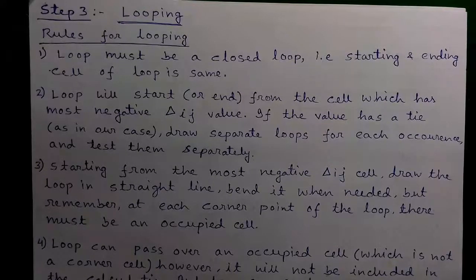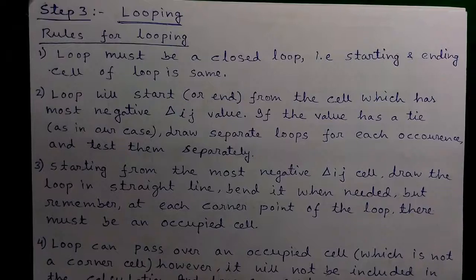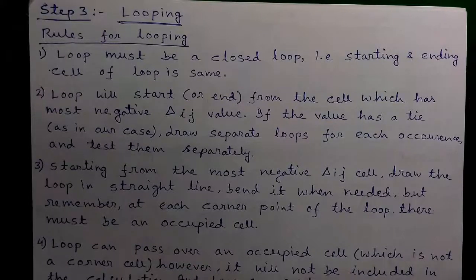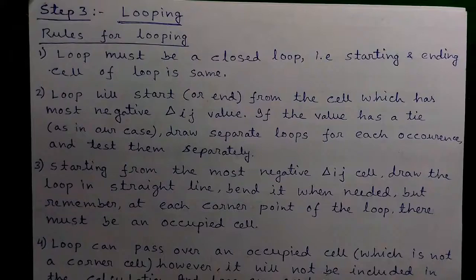So in part 1 of the video I told you how to check the IBFS or initial basic feasible solution and how to do step 1 to step 2.3 for Modi method. And in this video I will continue from step 3, that is the looping.